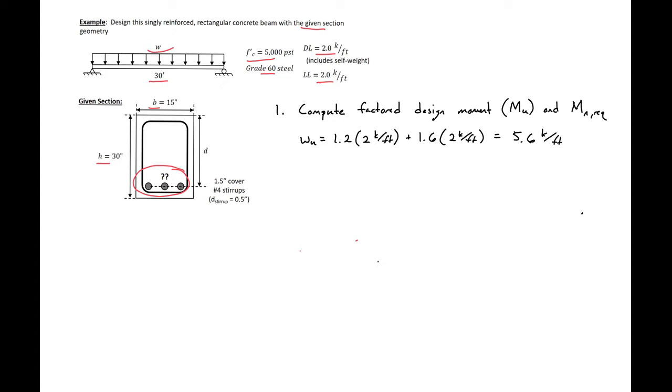We can use this then to find our factored ultimate moment, which will be at mid-span. For our simply supported beam with the distributed load, it will be WL squared over 8, so 5.6 kips per foot times our length, 30 feet squared over 8, to give us our factored ultimate moment of 7,560 kip inches. We're taking this times 12 inches per foot here to get to our units of kip inches.